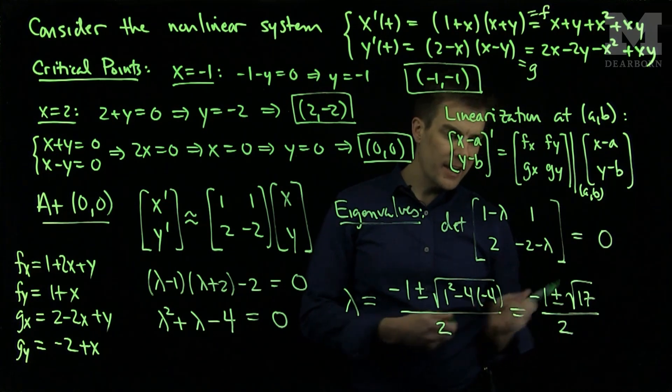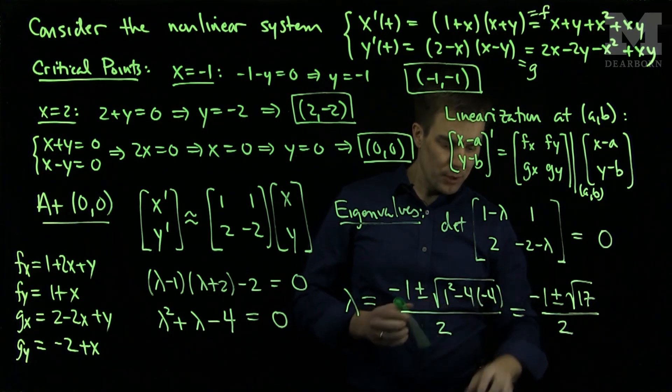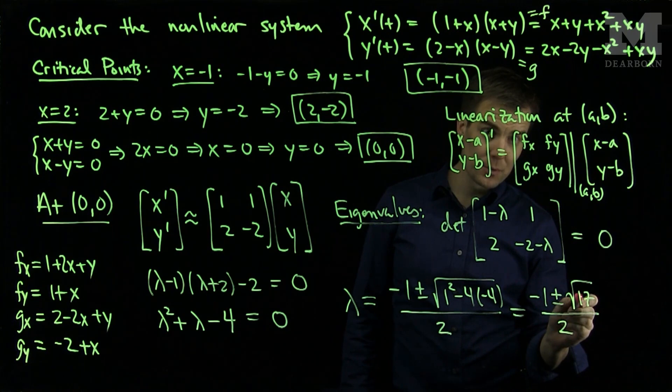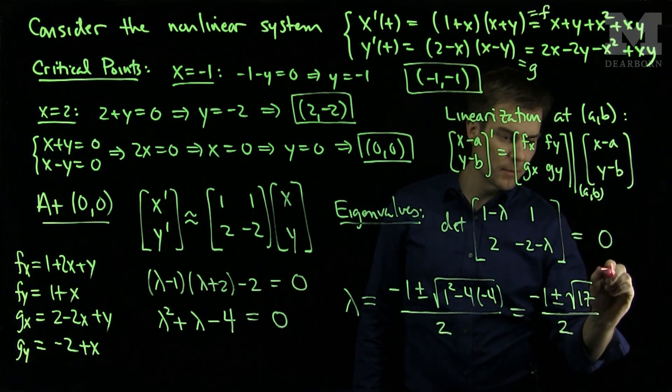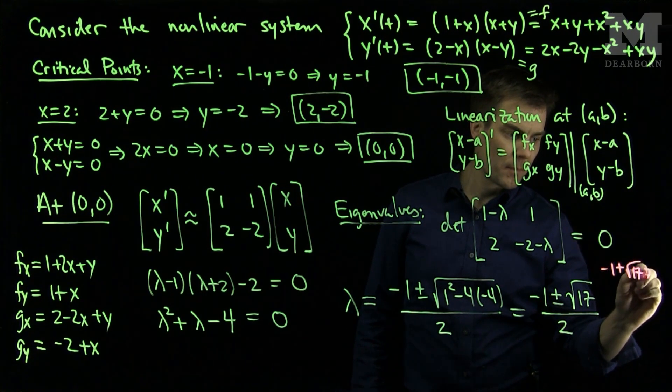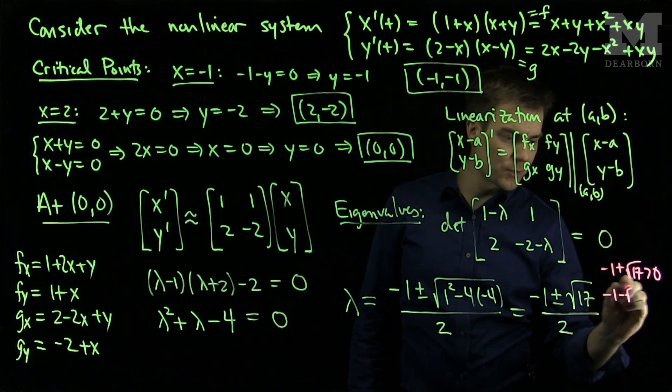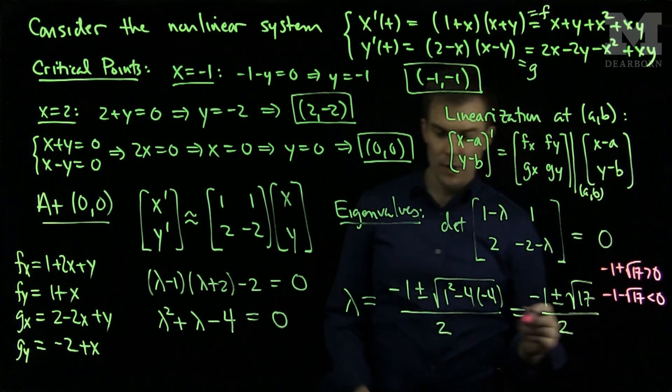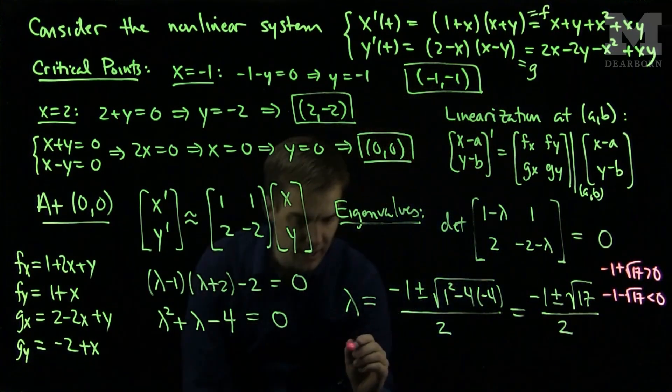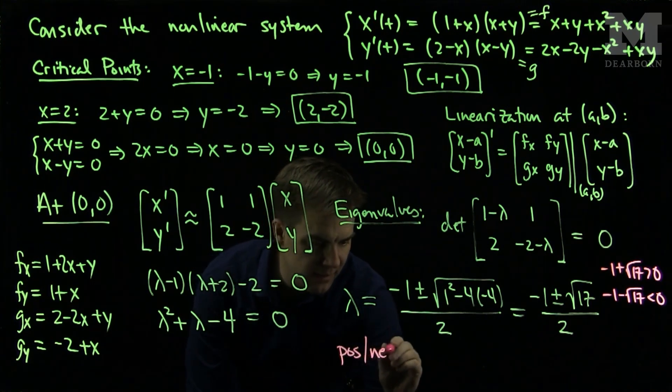Now, negative 1 plus root 17, negative 1 plus root 17 is a positive number. And negative 1 minus root 17 is a negative number. So my eigenvalues, I have a positive and a negative eigenvalue.